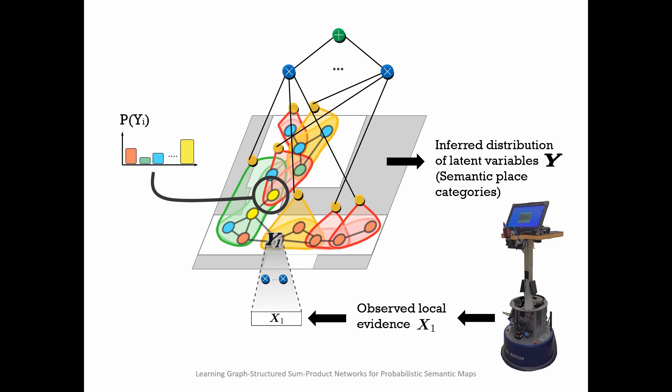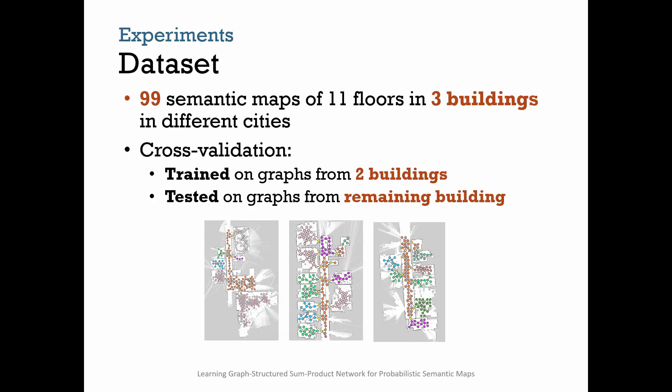Note that the inference results in the probability distribution of the semantic attribute. We used a dataset of 99 semantic maps, a plane from 11 floors in three buildings in different cities. We performed cross-validation of training Graph SPN model on graphs from two buildings and testing on the remaining building.